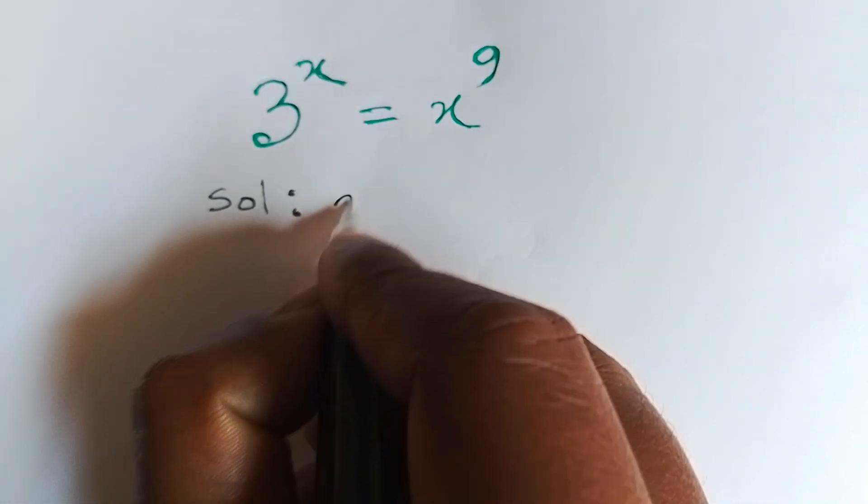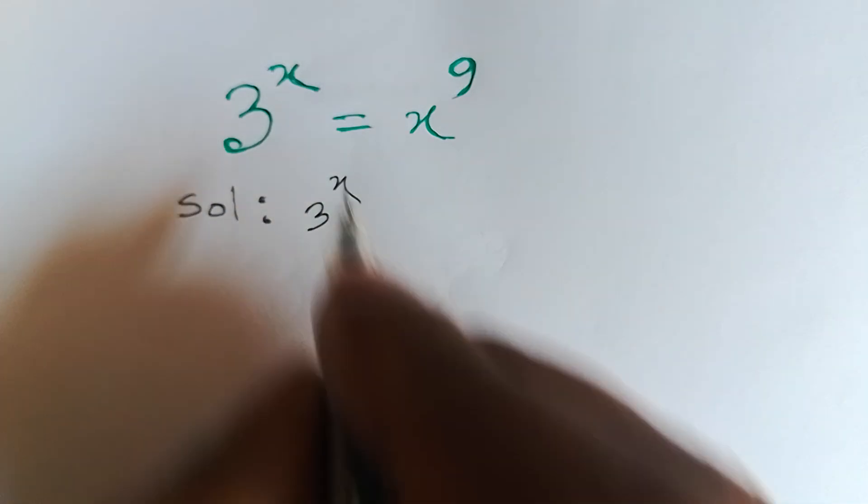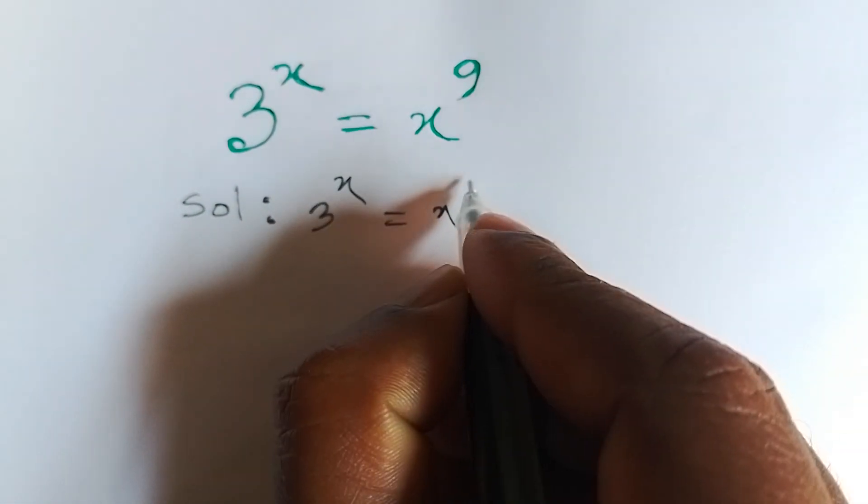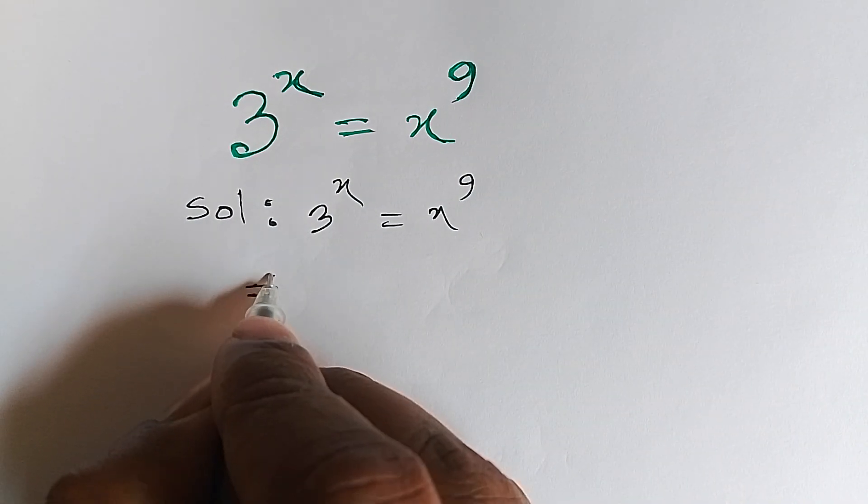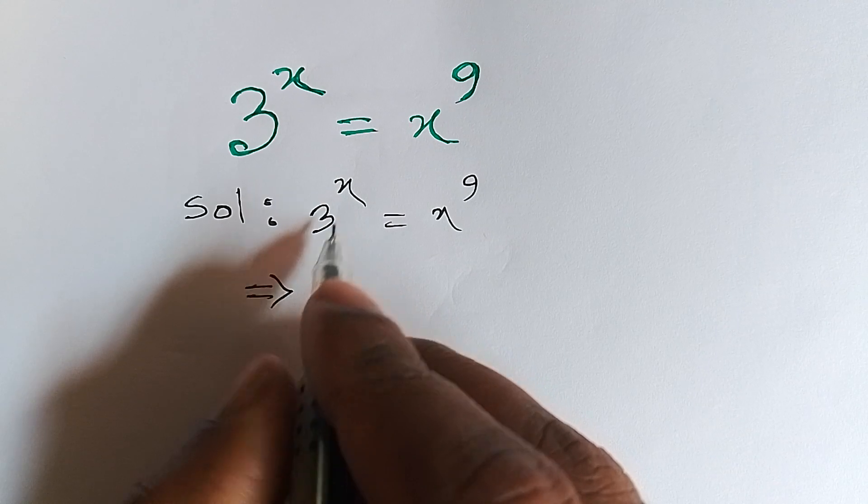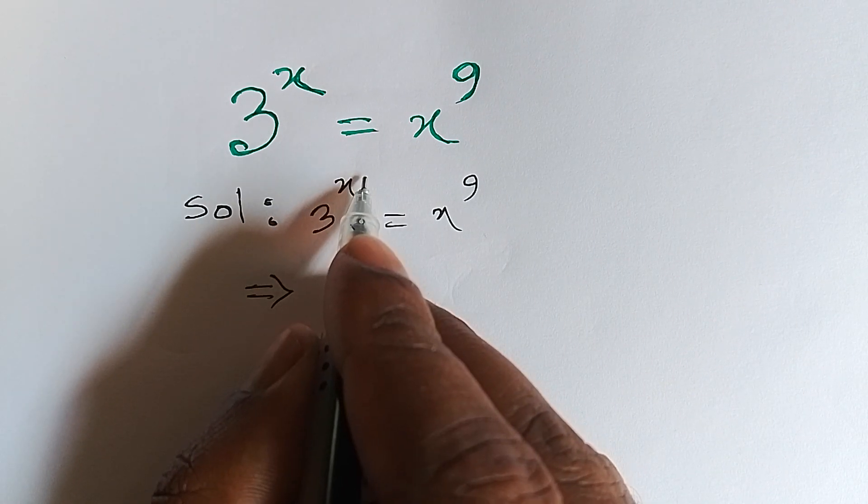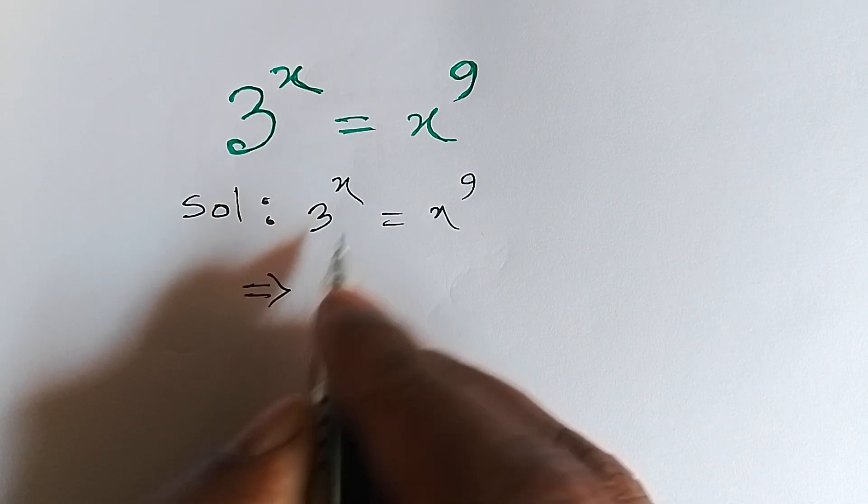Here, 3 to the power x is equal to x to the power 9. First, we multiply both sides by power 1 over 9x.